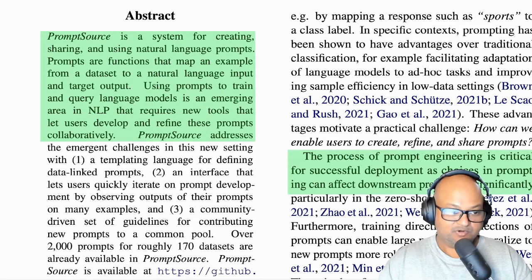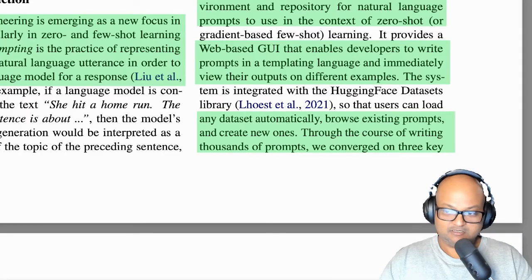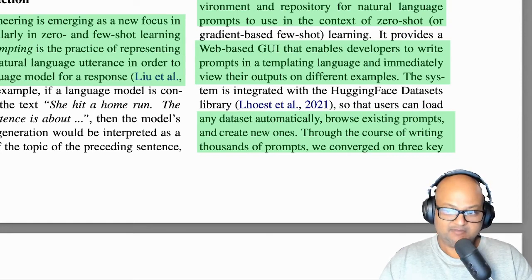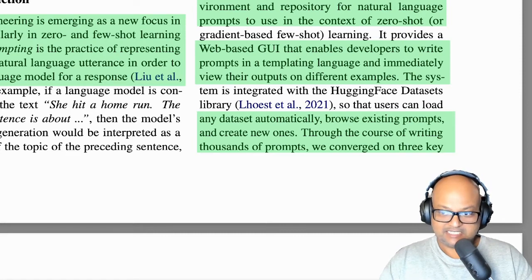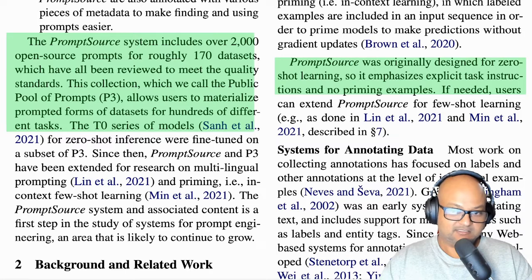They call their system PromptSource. As the title says, they mean for PromptSource to be like an IDE for natural language prompts. PromptSource is a web-based UI that lets developers write and manage prompts in a templating language and also view their output on a number of different examples. They've made their system, code, and all the prompts available on GitHub, with over 2000 prompts across 170 datasets.